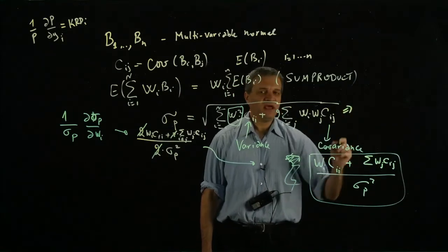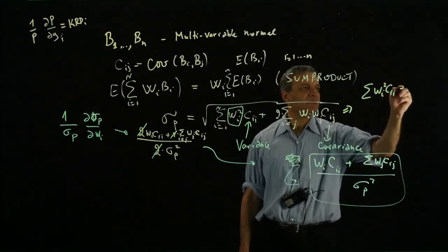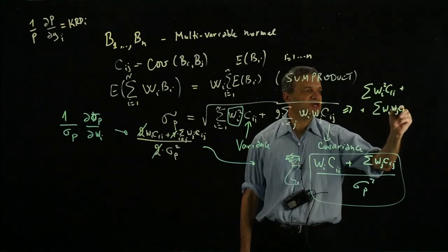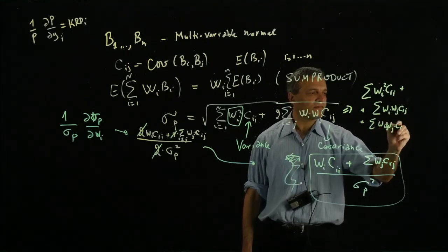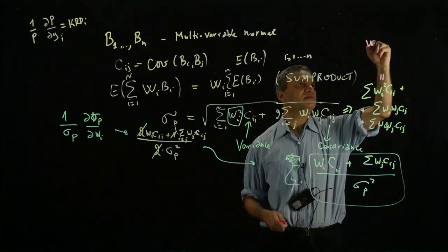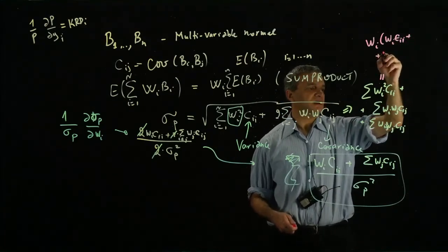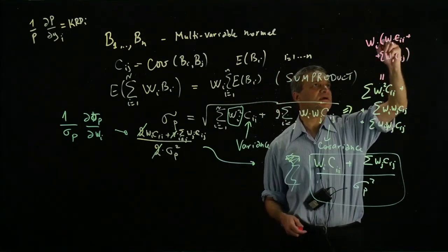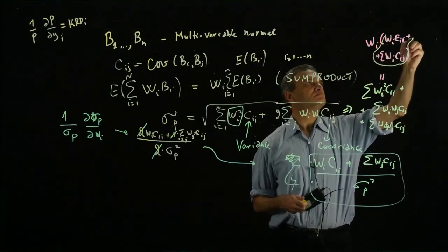If you take the original expression and divide it by wi, you can rewrite it as wi squared times cii plus wi times wj times cij, written twice. You can see immediately that if you factor out wi, you get: wi times (wi times cii plus the sum of wj times cij). Whatever is inside this square is exactly the numerator we had.